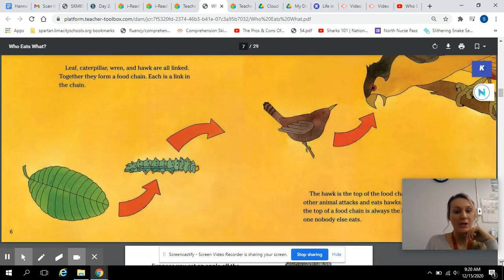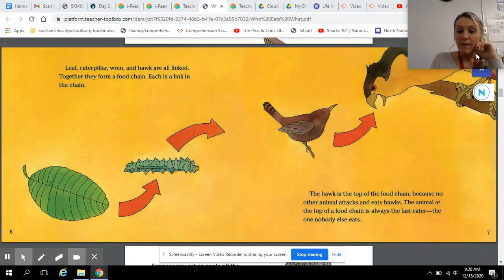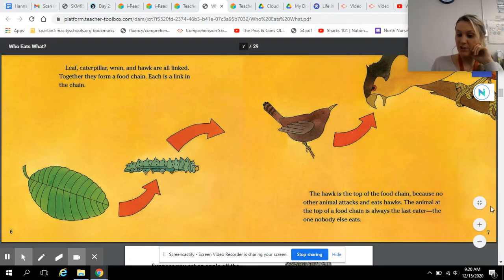Leaf, caterpillar, wren, and hawk are all linked together. They form a food chain. Each is a link in the chain. The hawk is at the top of the food chain because no other animal attacks and eats hawks. The animal at the top of the food chain is always the last eater, the one nobody else eats.